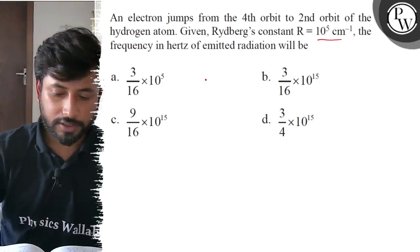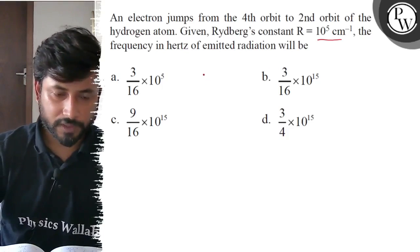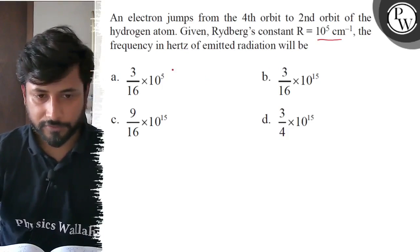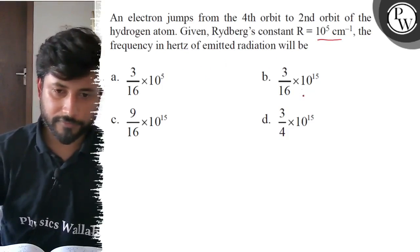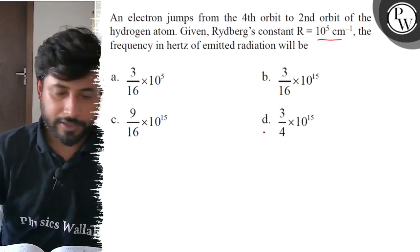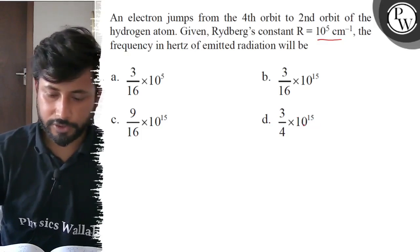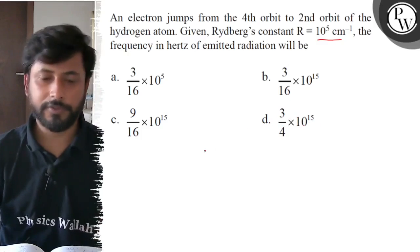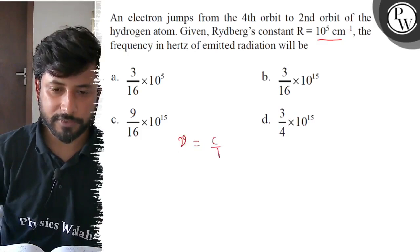Option A: 3×10 to the power... Option B: 3×10 to the power 5 by 16. Option C: 3×10 to the power 15 by 16. Option D: 9×9 by 16 into 10 to the power 15. Option E: 3 by 4 into 10 to the power 15. To find frequency, apply the formula: frequency = c divided by lambda.